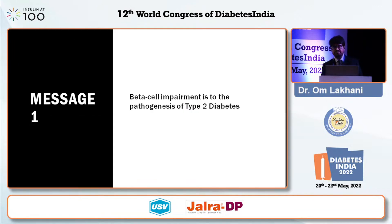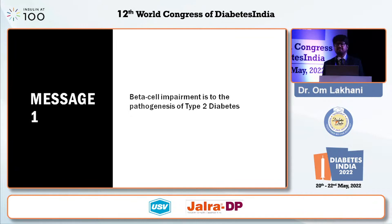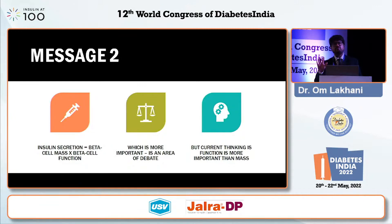To summarize, the key take-home messages: first, beta cell impairment is the key to pathogenesis of type 2 diabetes. A pre-diabetic patient is insulin resistant, while a type 2 diabetic patient is insulin resistant and has beta cell dysfunction — this is where doctors continue to be important. Second, insulin secretion is a function of both beta cell mass and beta cell function. Of these, beta cell function is believed to be more important and is why remission is more likely. Preservation of beta cell is key in preventing progression from pre-diabetes to diabetes and in preventing further progression in established diabetes.